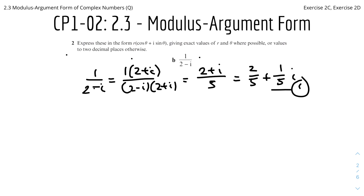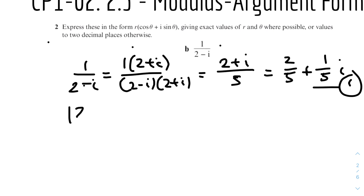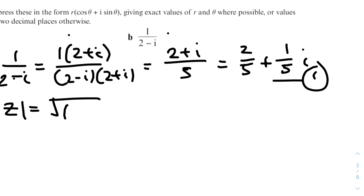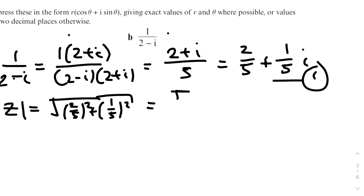Now let's find r, the modulus. The modulus of z equals the square root of the x-component squared plus the y-component squared. In this case it will be √((2/5)² + (1/5)²). Putting that into the calculator gives us r = √5 / 5.